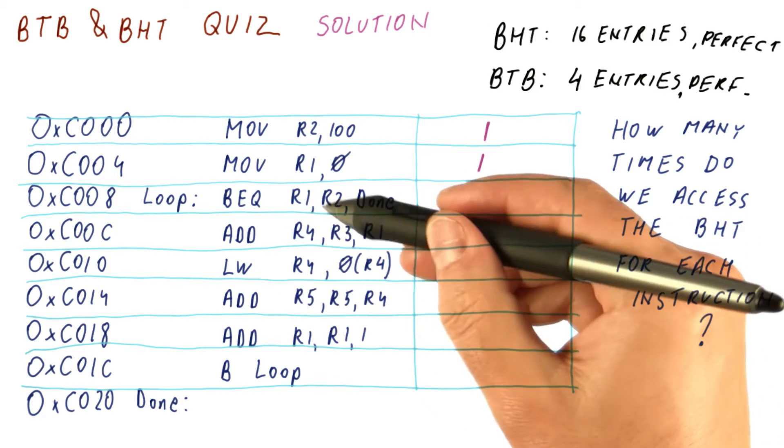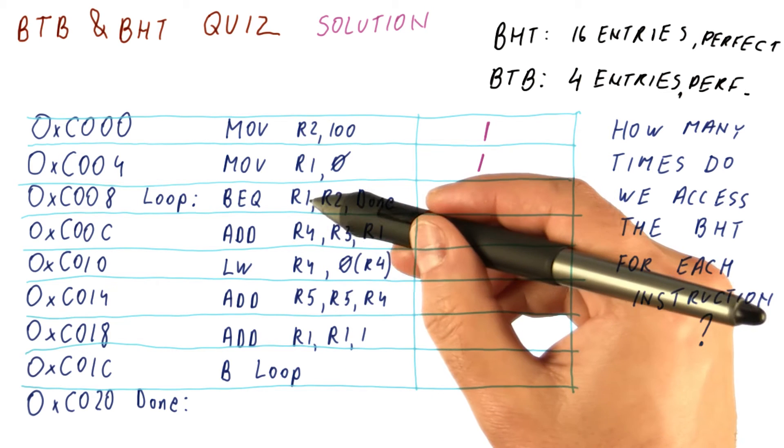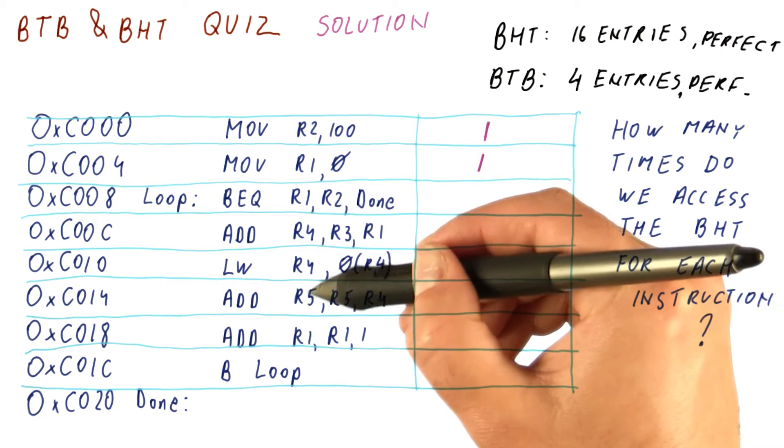Now we execute this loop once more with R1 being equal to 1, and then 2, 3, etc.